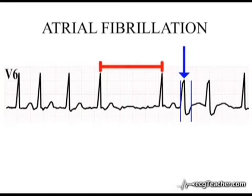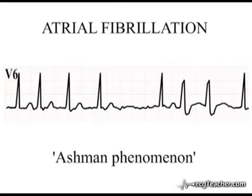Aberrant ventricular conduction of an early depolarisation wave following a long RR interval in atrial fibrillation is termed Ashman's phenomenon. Although this may affect either bundle branch, the transient block usually occurs in the right bundle, and the aberrantly conducted complex therefore usually demonstrates a right bundle branch block morphology.